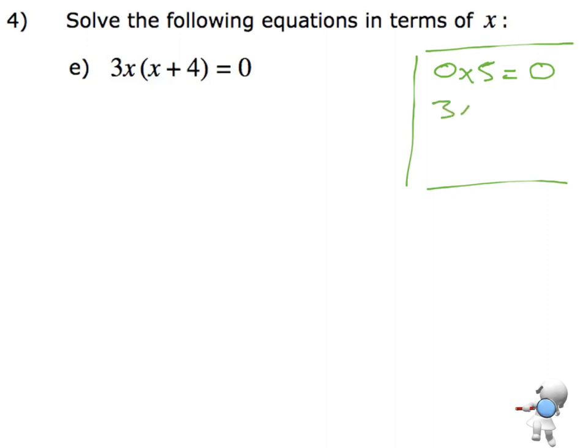If I did 3 times 0, that's going to give me an answer of 0. So the rule is, if I multiply anything by 0, the answer is always going to be 0.